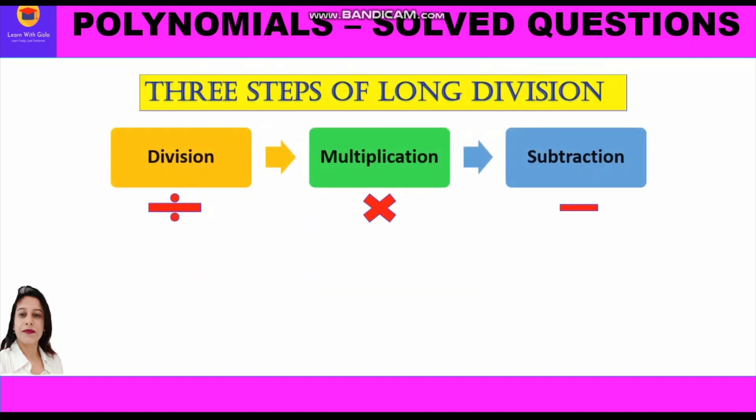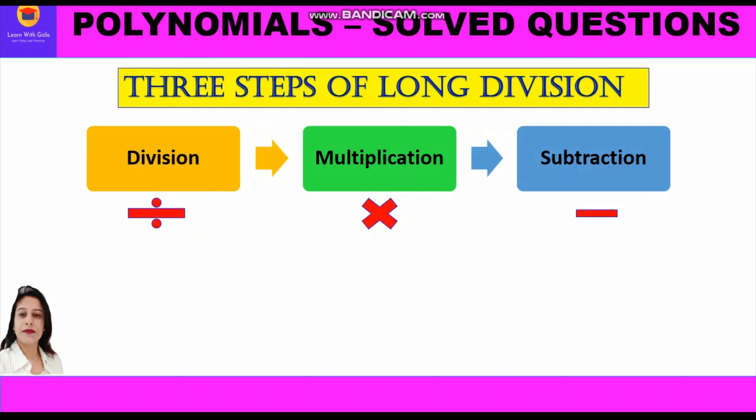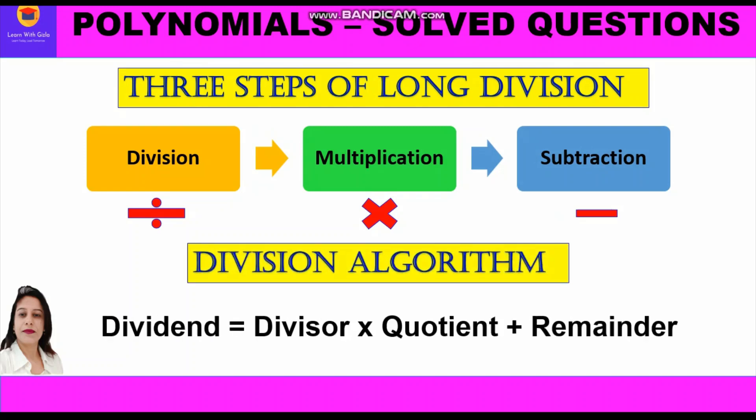Long division of a polynomial is the same as long division of any whole number. The three steps involved in the long division process are: first, division; second, multiplication; and third, subtraction. For checking our answer, we shall use the division algorithm: dividend = divisor × quotient + remainder.